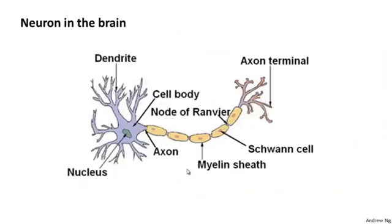Neural networks were developed as simulating neurons or networks of neurons in the brain. So to explain the hypothesis representation, let's start by looking at what a single neuron in the brain looks like.